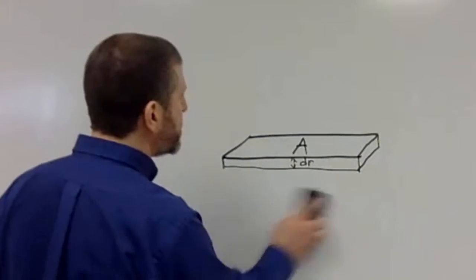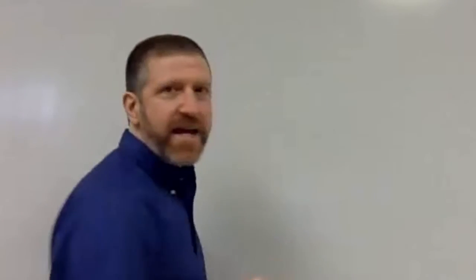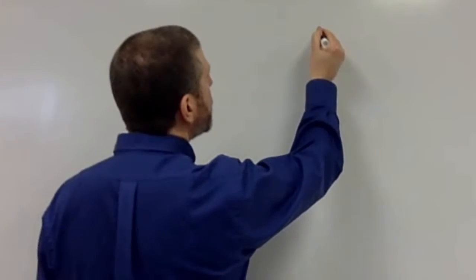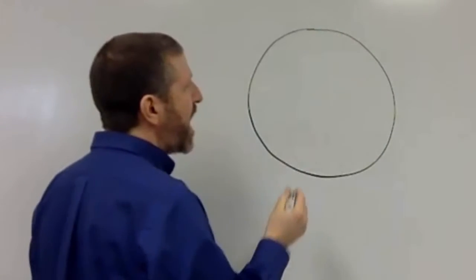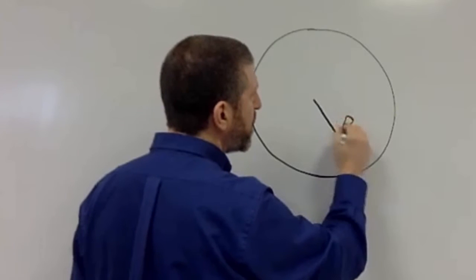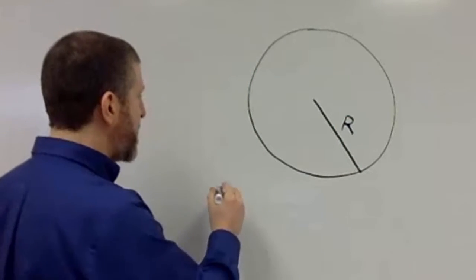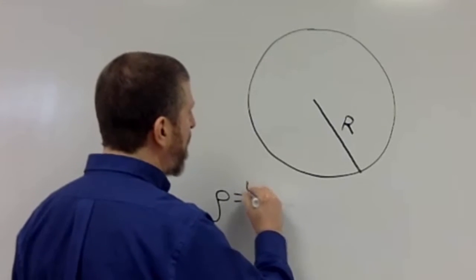Let's say we've got this situation right here. Let's say we've got a sphere. This is a three-dimensional sphere and it's got radius big R. But I've got a charge density ρ equals some function of r. Let's say it's like 4r.